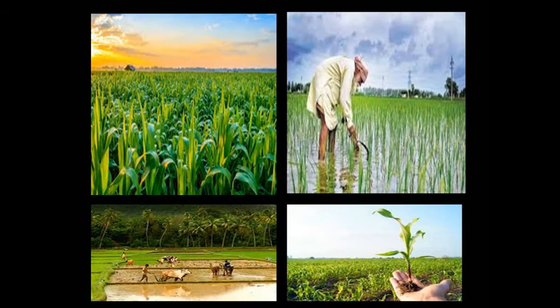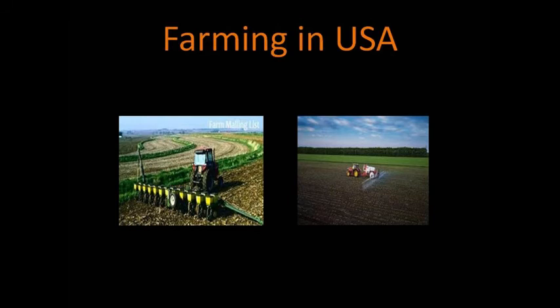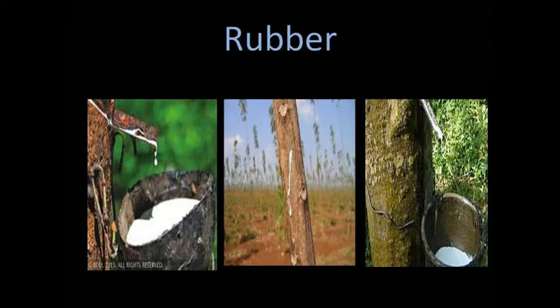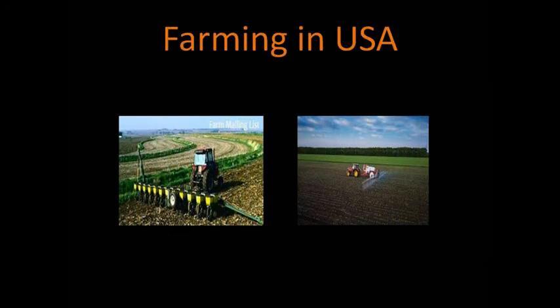Farming in a developed country — the USA — is totally different. Mainly it is commercial in nature. The size of the country is much bigger than India and it is not so populous. The size of the farms are very large, with an average size of 500 acres, mostly run by a single family. There is no manual labor involved; the work is done by machines and the farms are well equipped. Dairy and poultry farms are also there to support the farmer's family. Thank you.